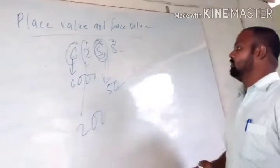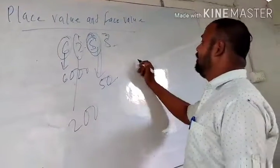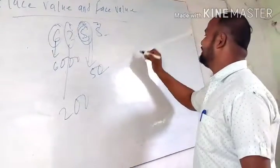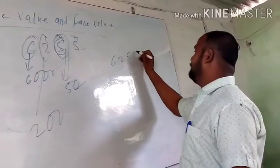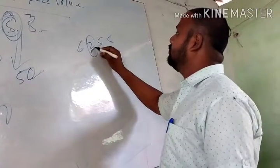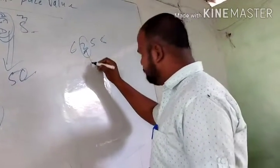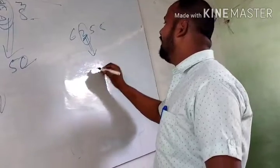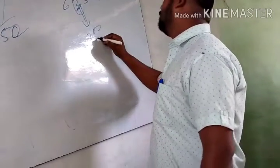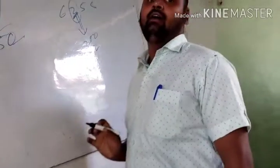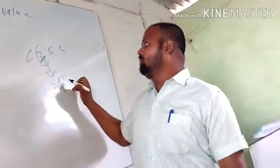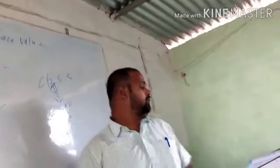अब face value क्या होता है। Place value change होता है, लेकिन face value change नहीं होता। जैसे कि 6258 हमारा number है — इसमें 2 का place value 200 होगा, लेकिन face value बस 2 होगा। तो face value = 2 और place value = 200।